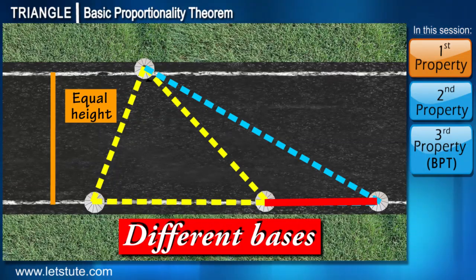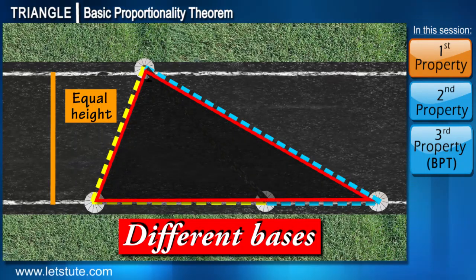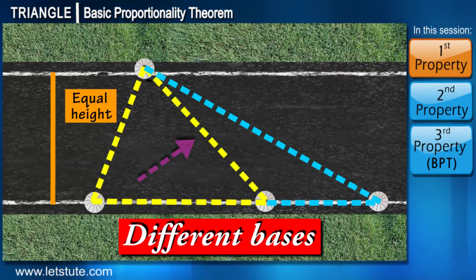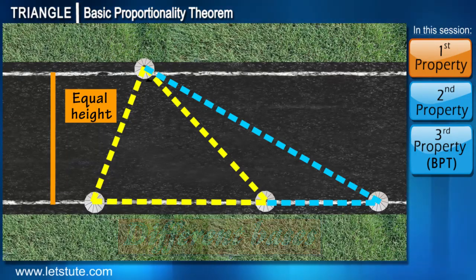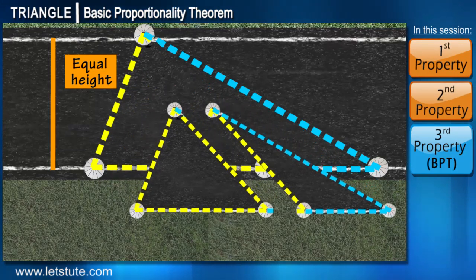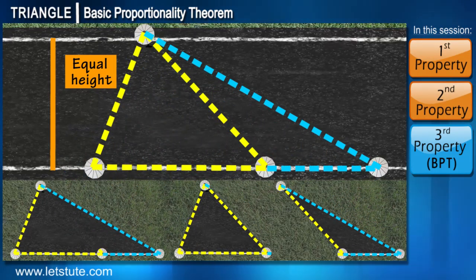The bases are different for both triangles. If we notice the diagram, we can see that we have split a triangle into two by joining a line. We don't even need two parallel lines to show that these triangles have equal height.